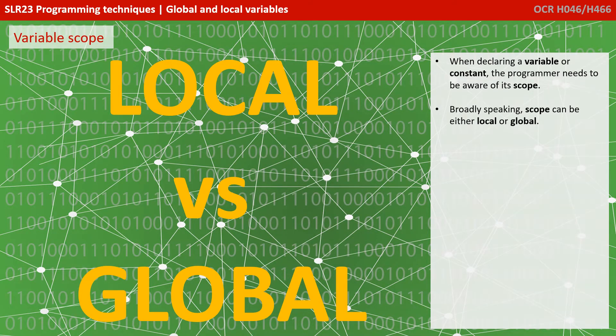When declaring a variable or a constant, the programmer needs to be aware of its scope. Broadly speaking, scope can be either local or global.